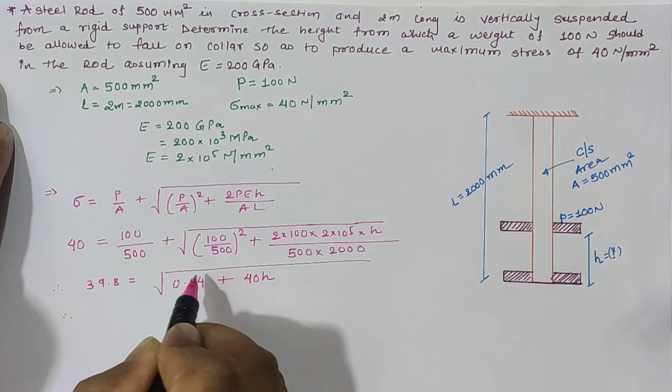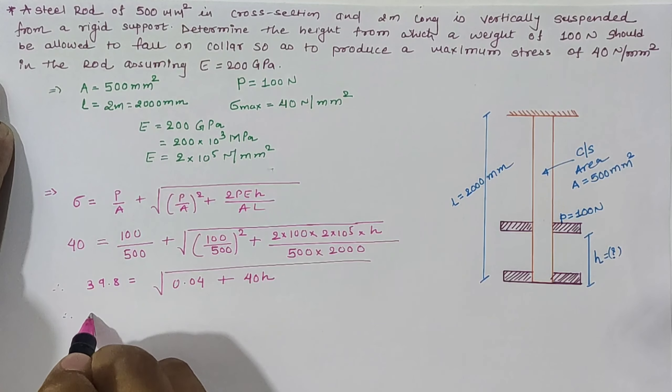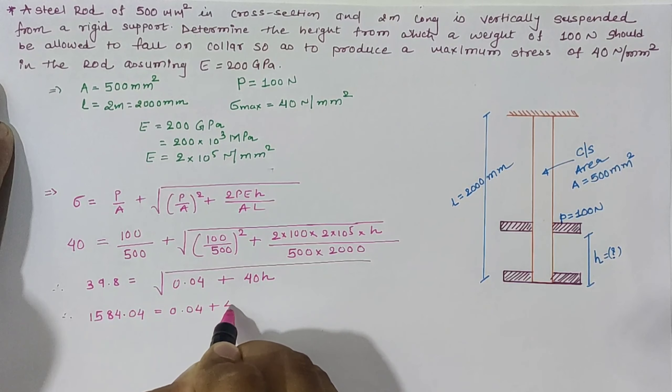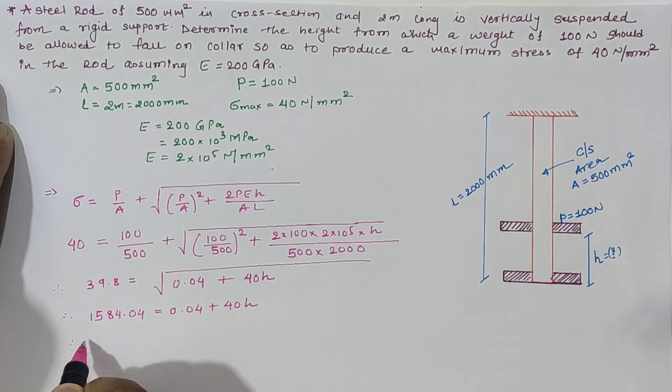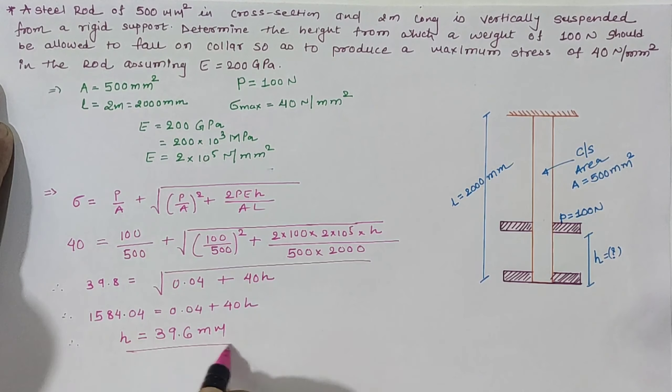Taking square on both sides: 39.8² = 1584.04, which equals 0.04 + 40H. Solving this, we get H = 39.6 mm, which is our answer.